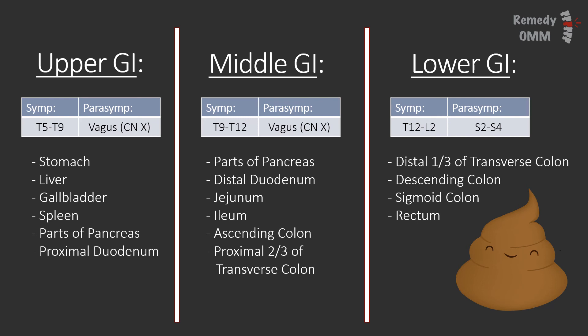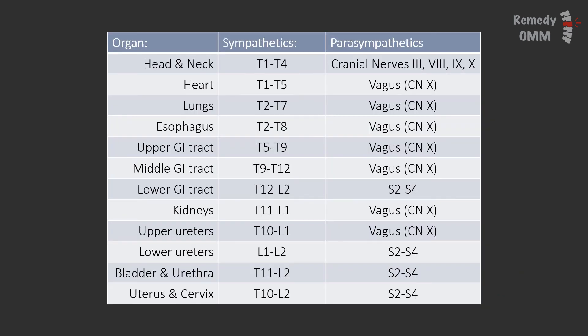Notice how the lower GI tract actually has parasympathetics coming from the pelvic splanchnics, also known as S2 to S4. Here's the table again for your reference. Practice questions will help you sharpen your instincts for this information — you don't have to memorize all of these, but pay attention to the ones you see in question stems, as those tend to be the most high yield.